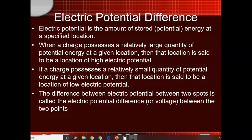Electric potential is really the amount of stored potential energy at a given location due to the charges around it. When a charge has a relatively large amount of potential — a lot of stored energy — that location is said to be an area of high electric potential. If it doesn't have a lot of potential, it's a low potential energy area.